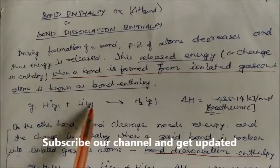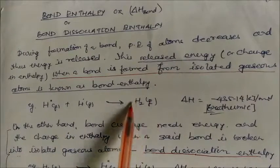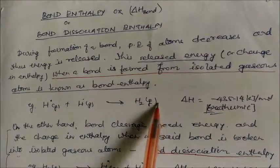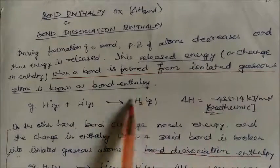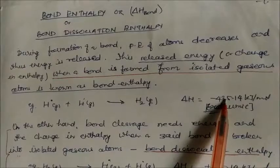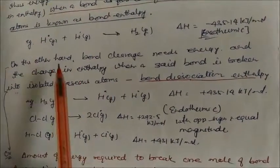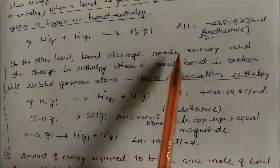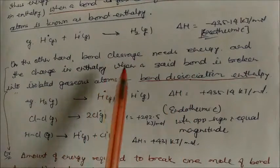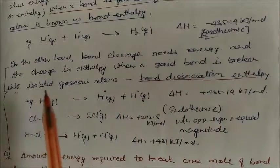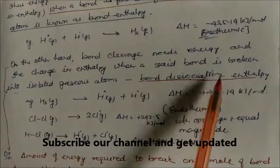For example, hydrogen atoms in gaseous form are neutral atoms. When they combine, they release some energy in the formation of hydrogen gas — this is an exothermic process. On the other hand, bond cleavage requires energy, and the change in enthalpy when a bond is broken into isolated gaseous atoms is called bond dissociation enthalpy.